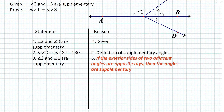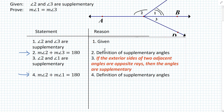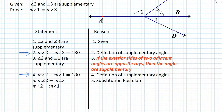Now that we've established that angle 2 and angle 1 are supplementary, we can use the definition of supplementary angles again to state that measure of angle 2 and angle 1 add up to 180 degrees — again, the definition of supplementary angles. So how do we use these statements to prove that measure of angle 1 is equal to measure of angle 3? If you focus on step 2 and step 4, they both add up to 180 degrees. So we can write: measure of angle 2 plus measure of angle 3 equals measure of angle 2 plus measure of angle 1, and the reason is the substitution postulate.